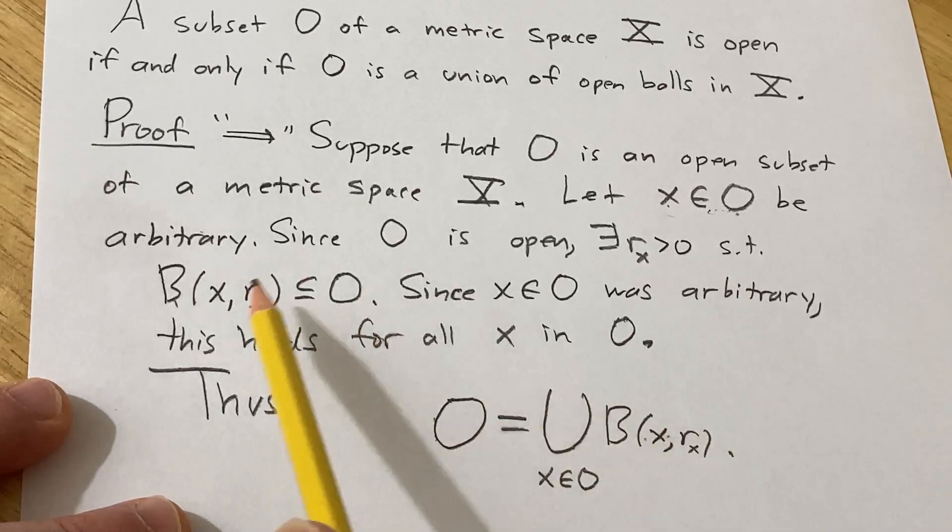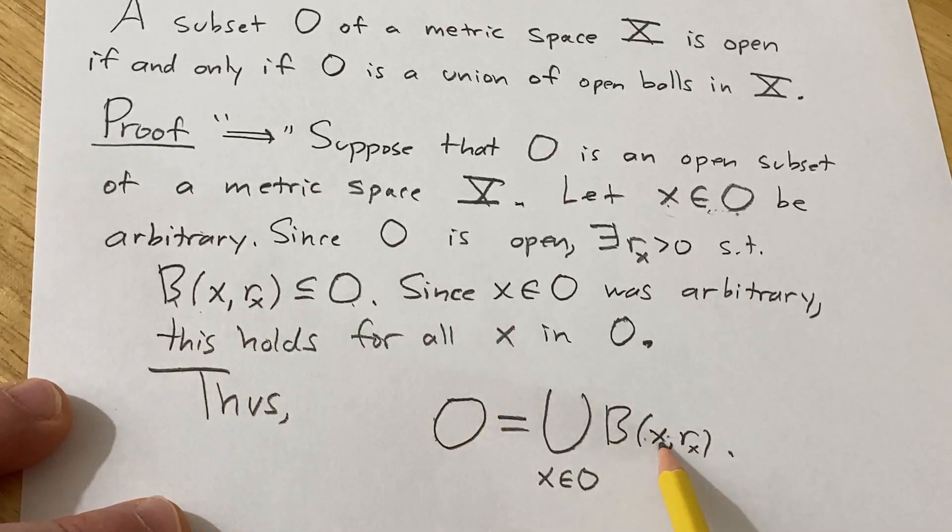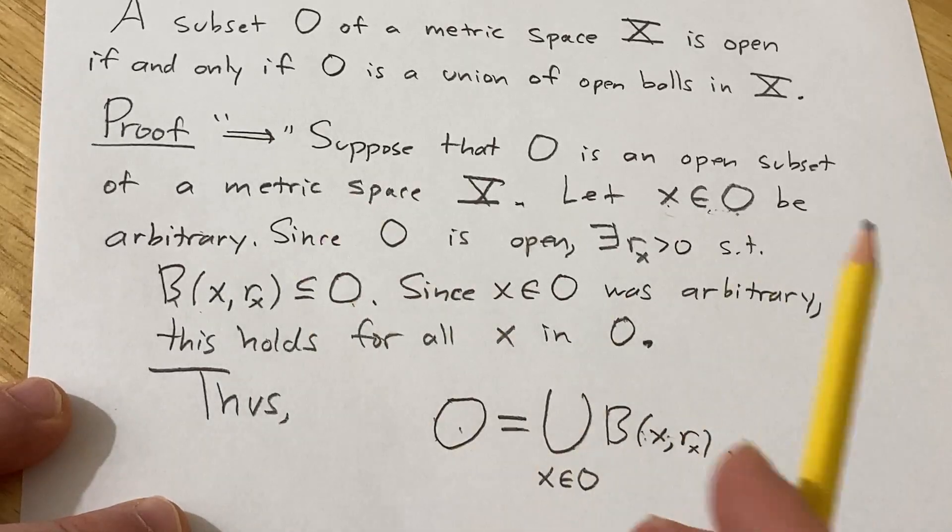Conversely, each of these balls is contained in O. Therefore, the union of the balls is contained in O. So we have double inclusion, so we have equality just from what's written here.